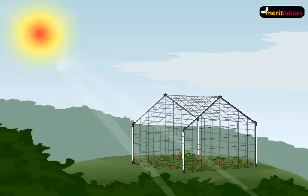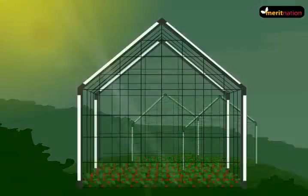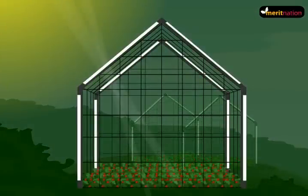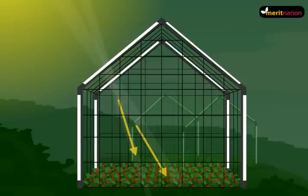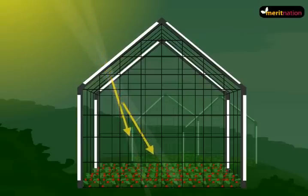You see this structure — what do you think it is? Of course it's a glass structure, and you can see small plants as well. But there is a specific reason why that structure exists. It allows sunlight to enter but does not allow the heat to escape. Let's understand what exactly is happening.